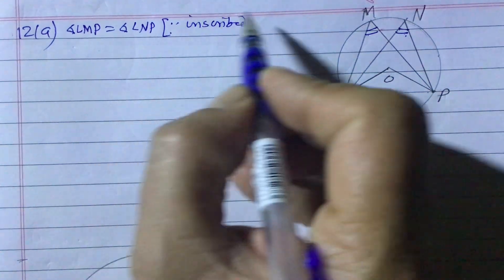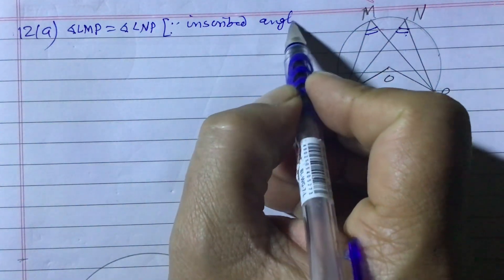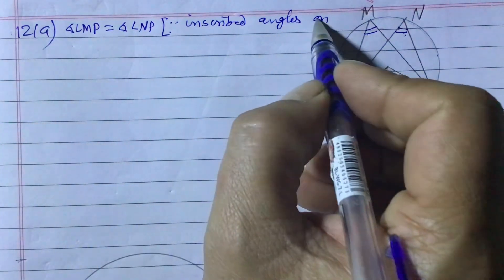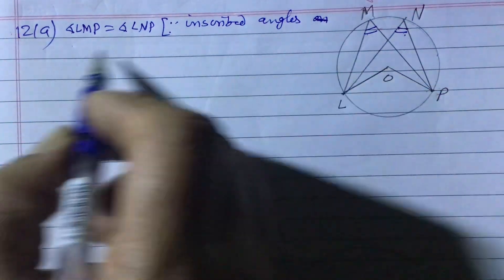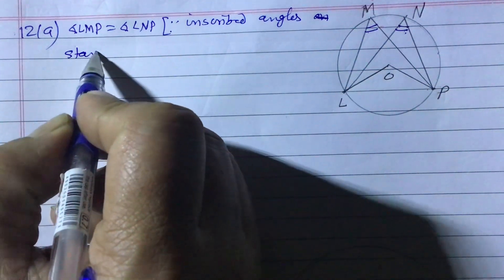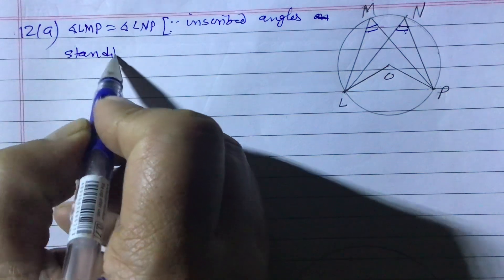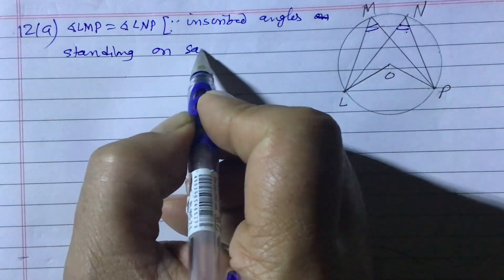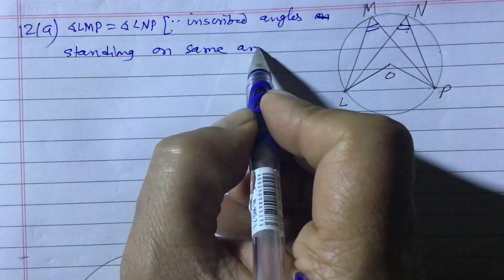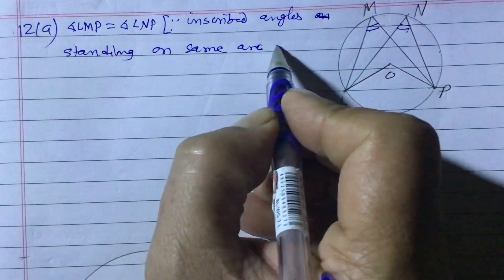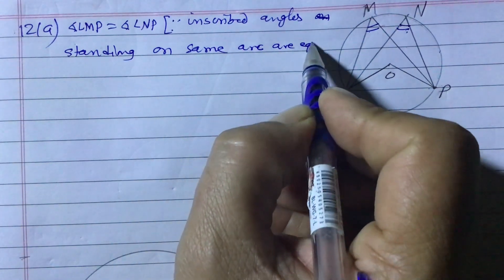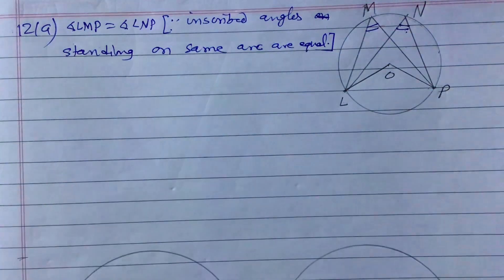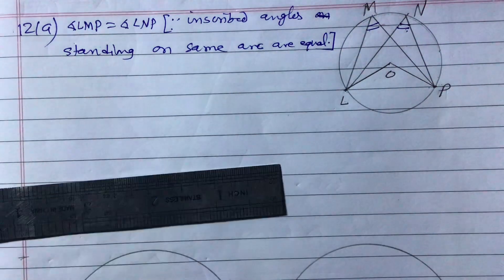Now we write the reason. Always write the reason: inscribed angles standing on the same arc are equal. This is the reason we write. Question number A, worth one mark, is now completed.